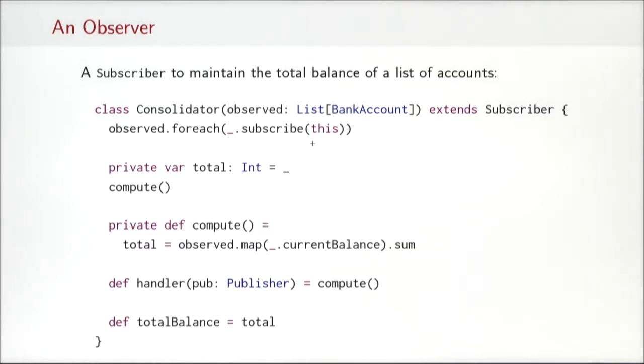Of course, one could envision more efficient ways to do this. Maybe take the difference of the balance of this account and apply that to the total variable. But for now, we are doing the most straightforward and simple way even if it's not the most efficient. Finally, there's an accessor method again, total balance, which gives you the current state of the total variable.